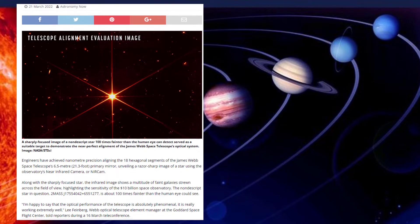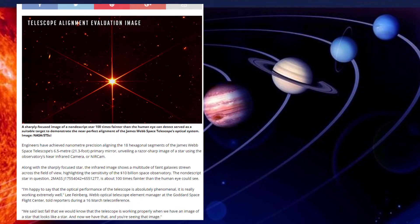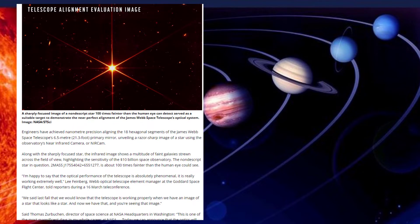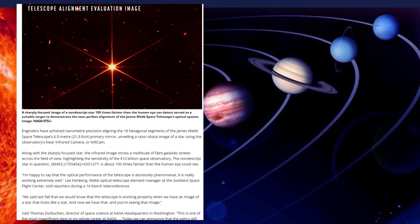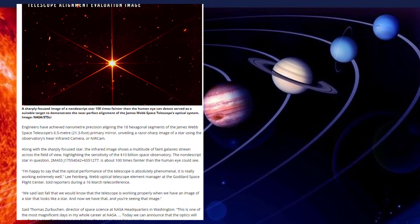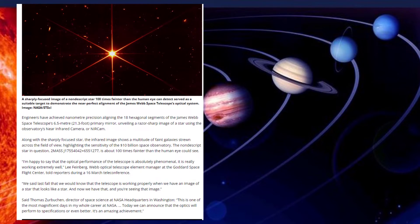Along with the sharply focused star, the infrared image shows a multitude of faint galaxies strewn across the field of view, highlighting the sensitivity of the $10 billion space observatory. The nondescript star in question, 2MASS J17554042+6551277, is about 100 times fainter than the human eye could see.